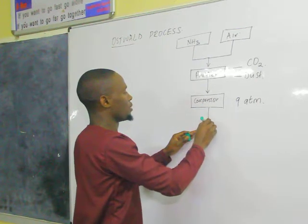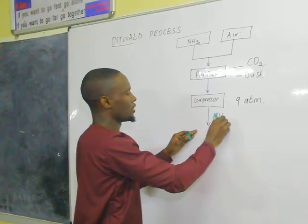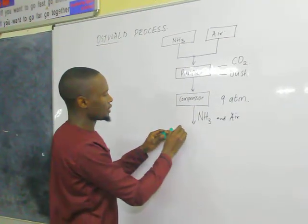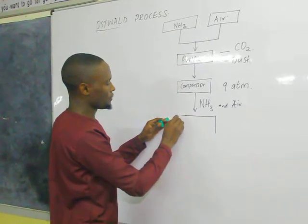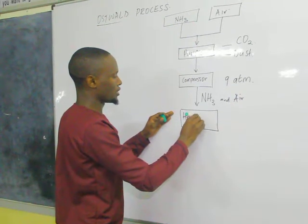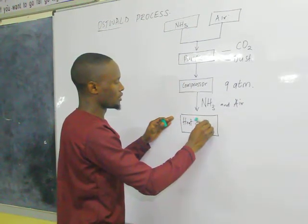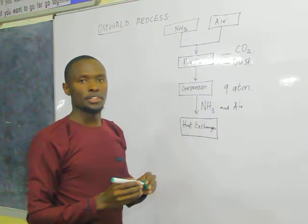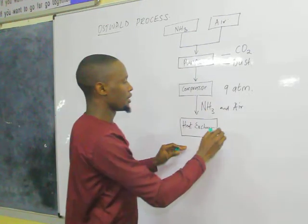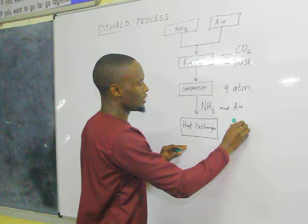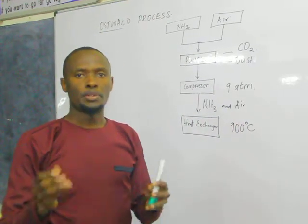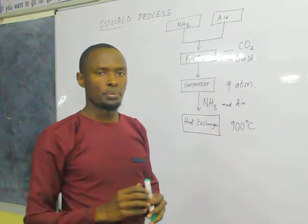The compressed mixture of ammonia and air is taken to the next chamber: the heat exchanger. In the heat exchanger, this mixture of ammonia and air is heated at a temperature of 900 degrees Celsius, which is responsible to initiate the process.